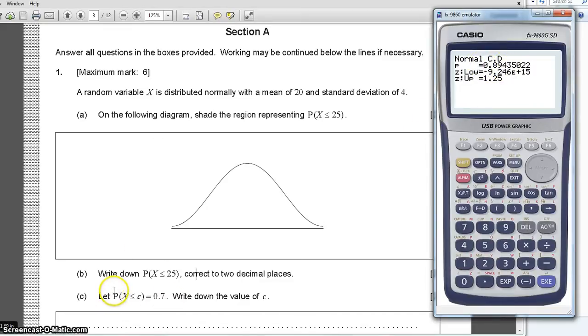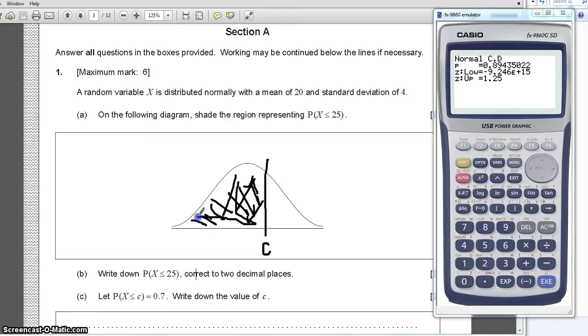Now, look at the difference with this question. It says, let the probability of X being smaller than or equal to C, number C, equals 0.7. Write down the value of C. So, now we have the probability and we are asked which is this number, which is the upper bound, as we want X to be smaller than. Imagine that we have C here. We want it to be smaller than C. So, we want the area that is below this curve and this space. We want this area.